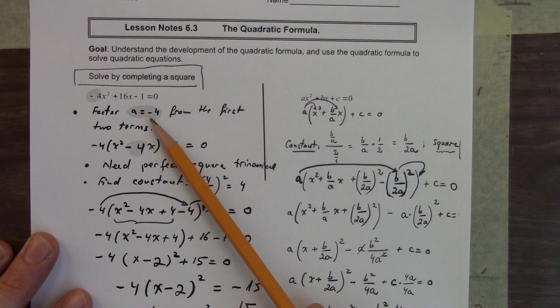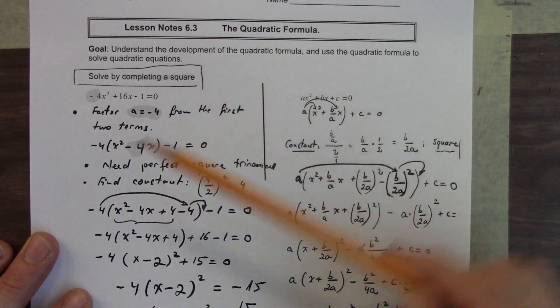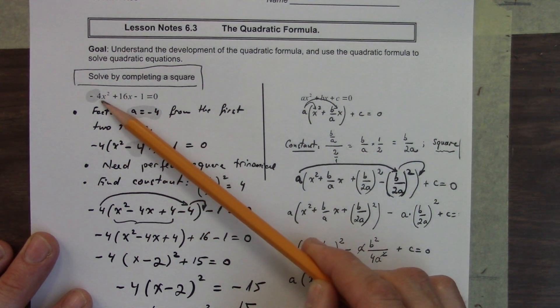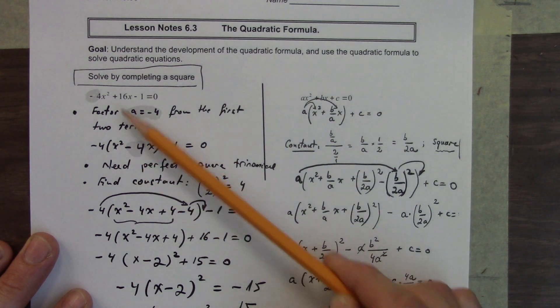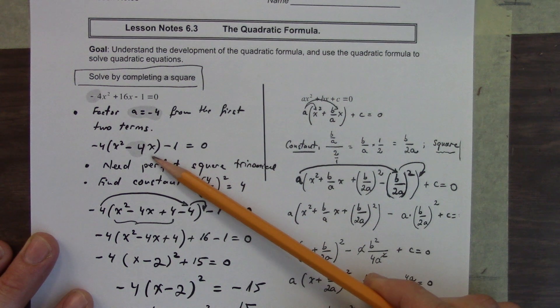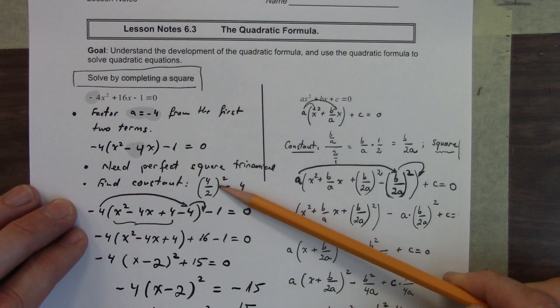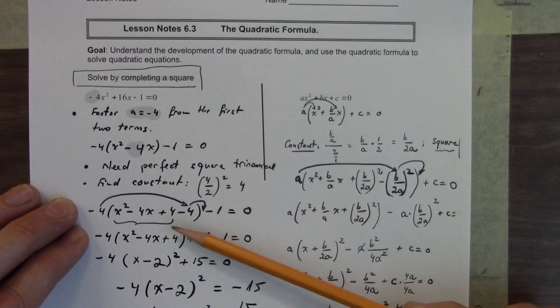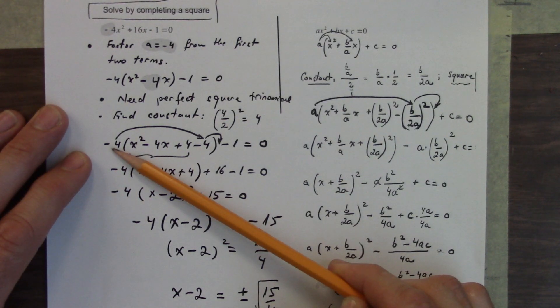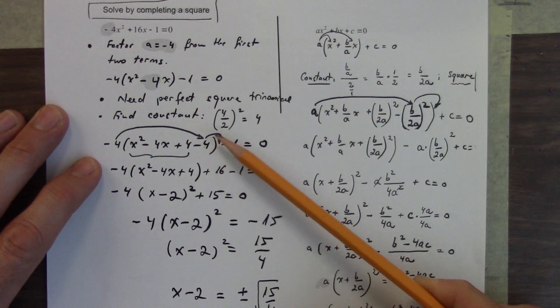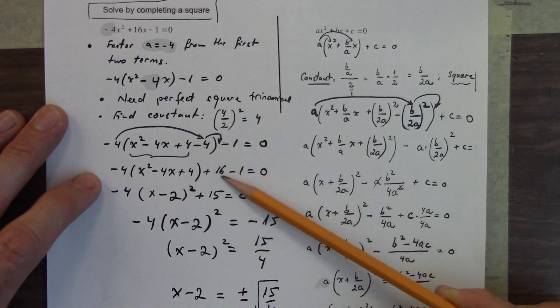So here's how we create this. Now we've gone to vertex form just to show the math that's required to do this. Here we have the a value as negative 4. We'll solve it by completing the square. We're going to divide negative 4 out of the first two terms. We're left with x squared minus 4.